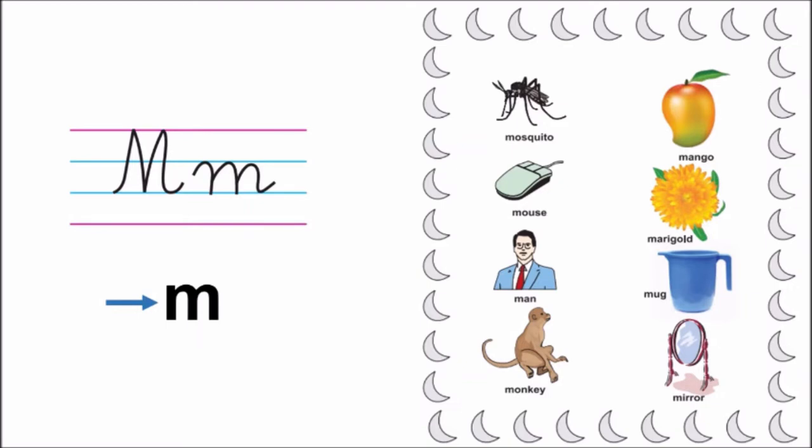Now, let us look at the pictures starting with letter M. So, let us look at the first picture. And say with me children. I told you children that mosquito is an insect because it has six legs.